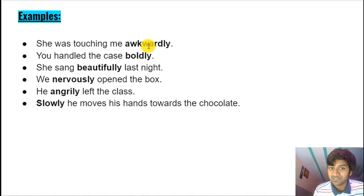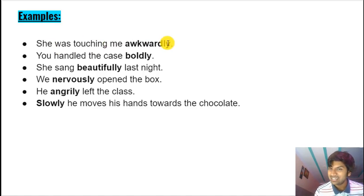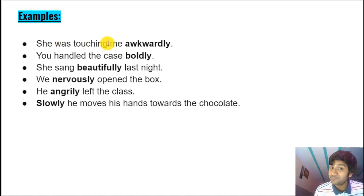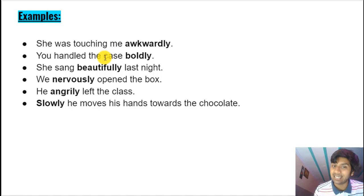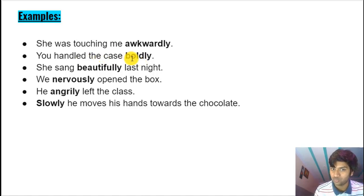Example: 'She was touching me awkwardly.' How was she doing it? Awkwardly — in an awkward manner. Subject, helping verb, main verb, object, then the adverb of manner after the object. 'You handled the case boldly' — you handled what? The case. How? Boldly — after the object of the verb.